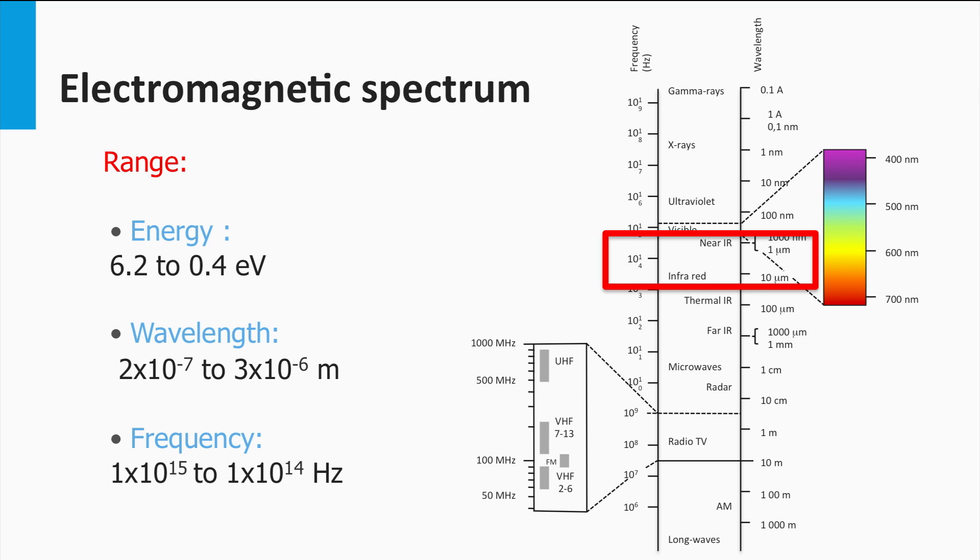On the low energetic side of the visible spectrum we find the near infrared and the infrared light, which has wavelengths of around 1 micron and 10 microns respectively. Microwaves are electromagnetic waves with wavelengths in the order of centimeters. Radio, TV waves are in the order of meters and tenths of meters, and AM waves in the order of 100 meters.